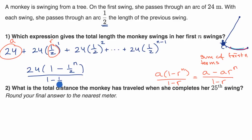So we could leave it like that, or we could simplify it a little bit if we like. One minus one half is equal to one half. 24 divided by one half is equal to 48, so if you wanted to you could simplify it to 48 times one minus one half to the Nth power. So either of these would be legitimate.